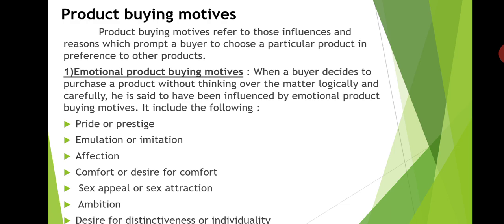What is pride or prestige? Many products are sold by sellers by appealing to the pride or prestige of the buyer. For example, diamond merchants sell their products by suggesting to buyers that possession of diamonds increases their prestige or social status. Many buyers are proud of possessing some goods and feel that possession of the product increases their social prestige or status.